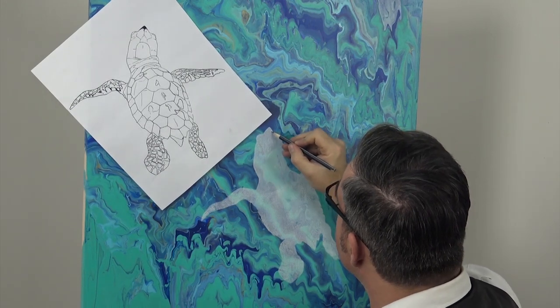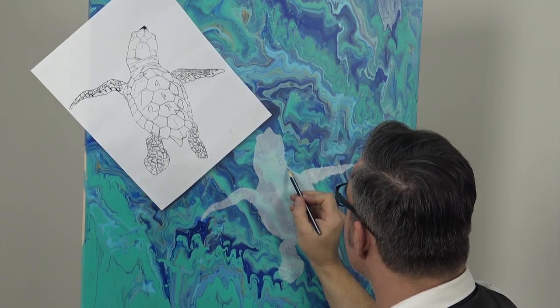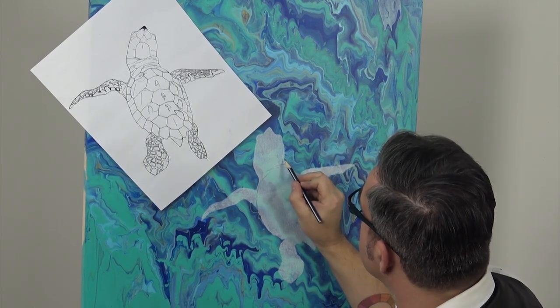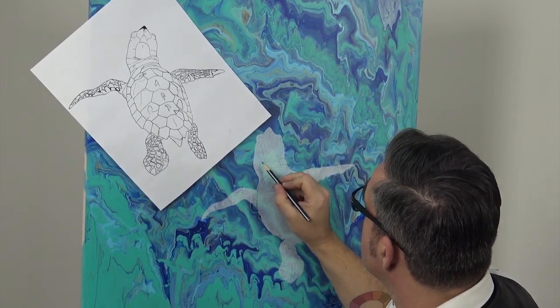Once your coat of white paint is dry, print out another turtle and redraw in the linework. I like to concentrate on the shapes on the shell and also the blocks of area where I want the shadows.